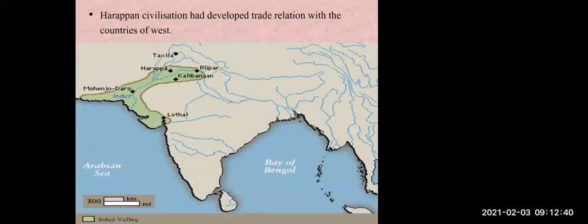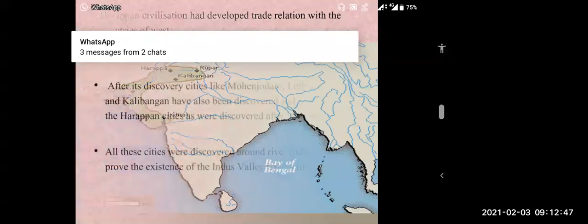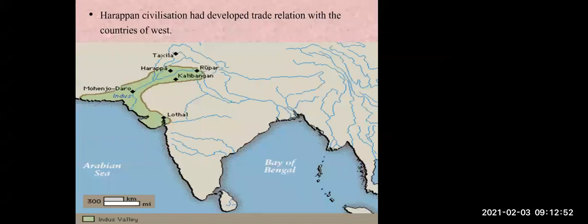The Harappan civilization had developed trade relations with the countries of the West. Looking at this map, the green-shaded parts show the Harappan cities — for example, Mohenjo-daro, Lothal, Kalibangan, and others — all discovered near the Indus River, whose name is also marked on the map.